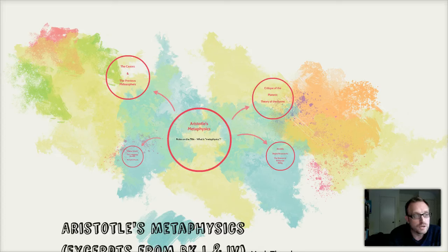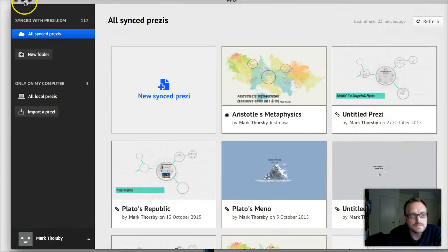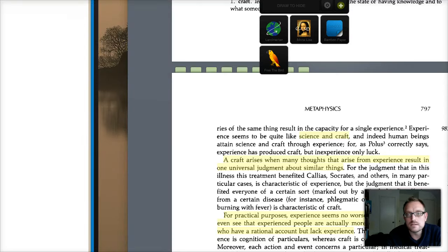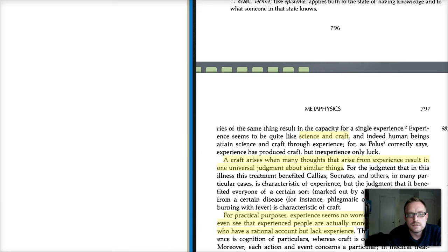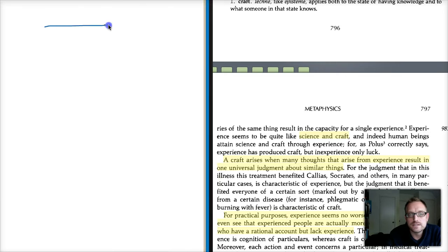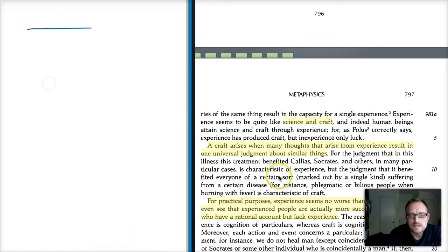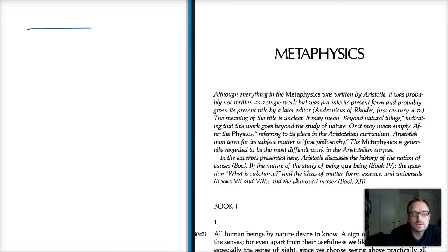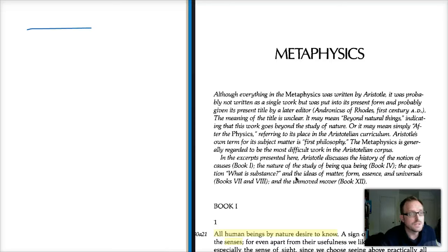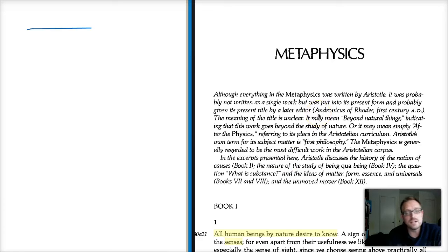Now I'm going to jump right into the text. What I've done is highlighted passages in the book and written notes in the margin — that's the best way to systematically study a philosopher's argument. I went through and re-read the metaphysics and highlighted specific passages. We're following along in the Hackett e-book. You can see the name of the later editor who gave the name 'metaphysics' — Andronicus of Rhodes, from around the first century AD, well after Aristotle's death.